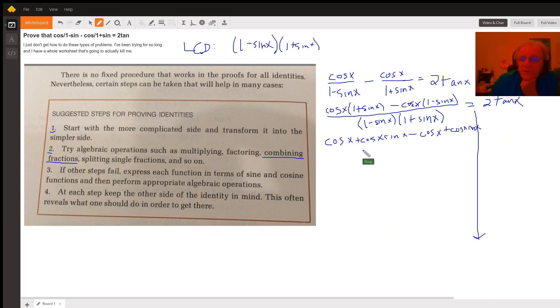And I let myself run out of room there all over the LCD, but now let's multiply these two together. We're multiplying two binomials that are the sum and difference of the same two terms. So that will result in a difference of squares. One minus sine squared of X.